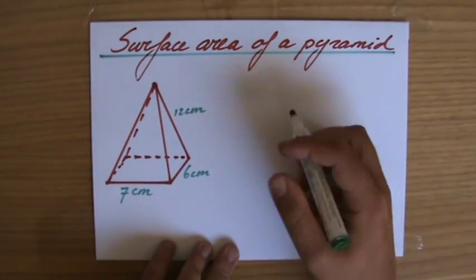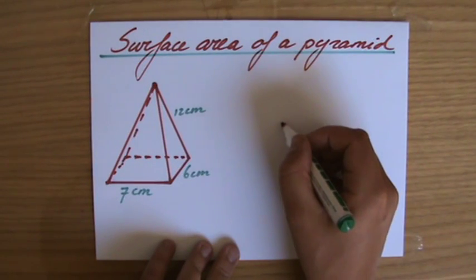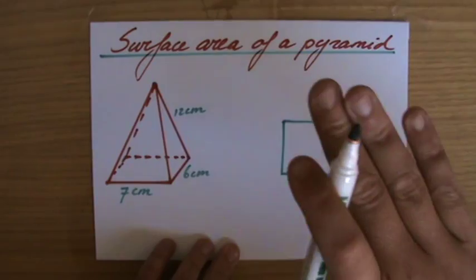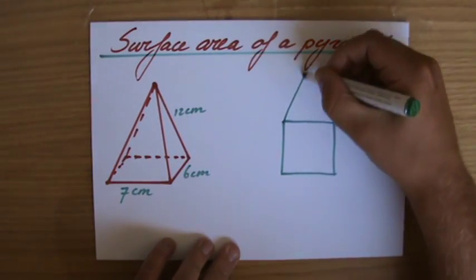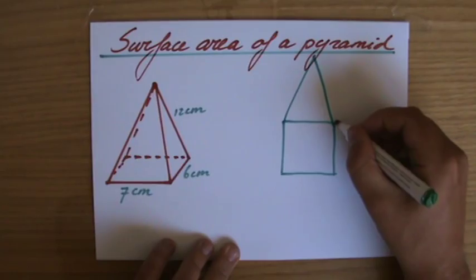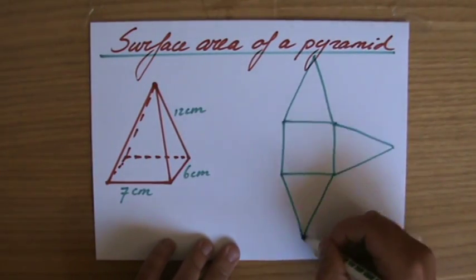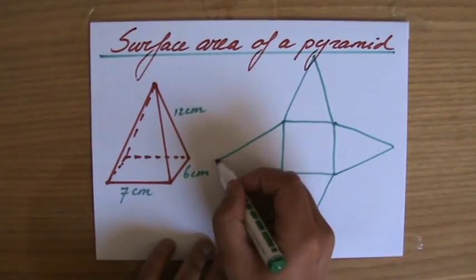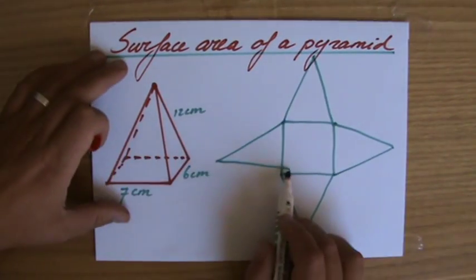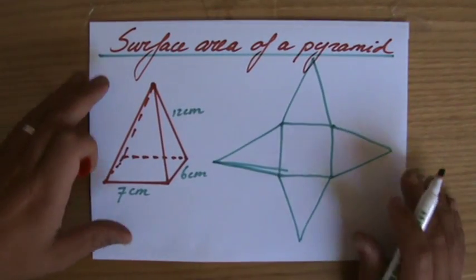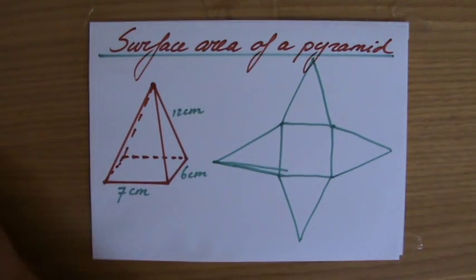So I'm going to do that here next to it. I'm going to sketch the net. So I'll start with the base. So the net, I'm looking on top of it now. And if I would cut it out, I would basically be able to make that pyramid. So this is roughly, it's just a sketch, the net of the situation.